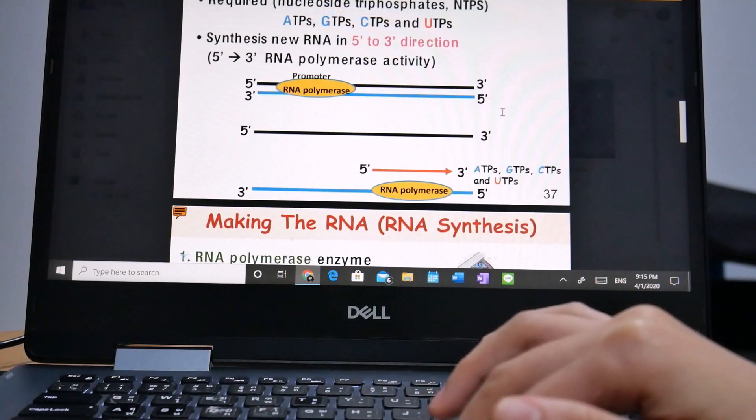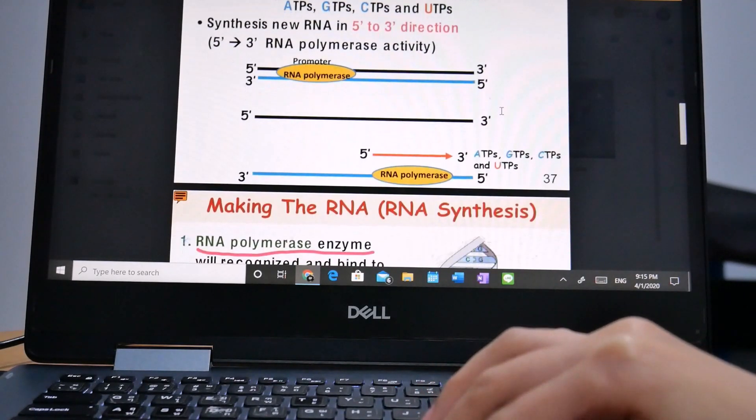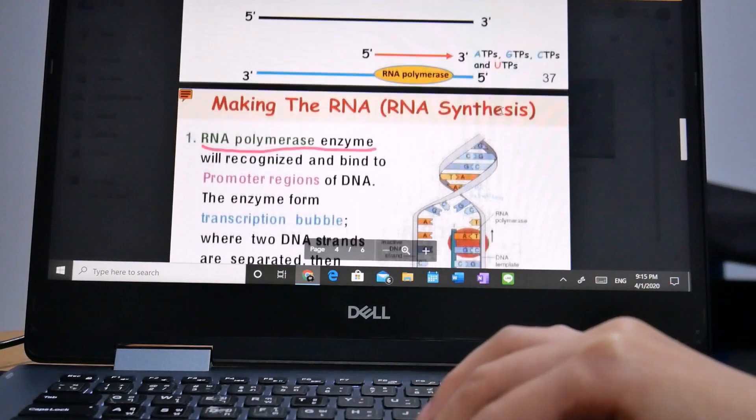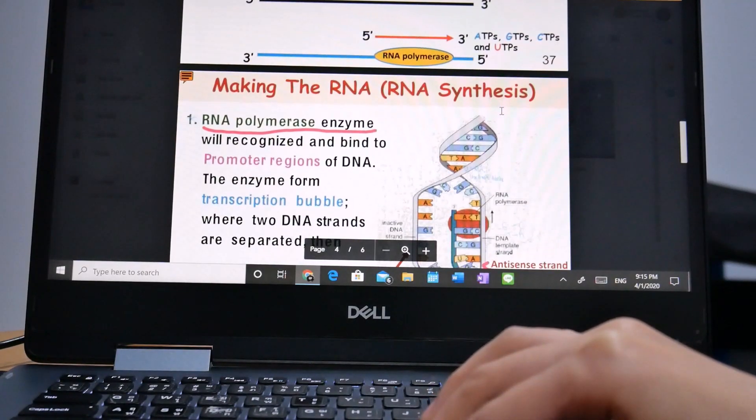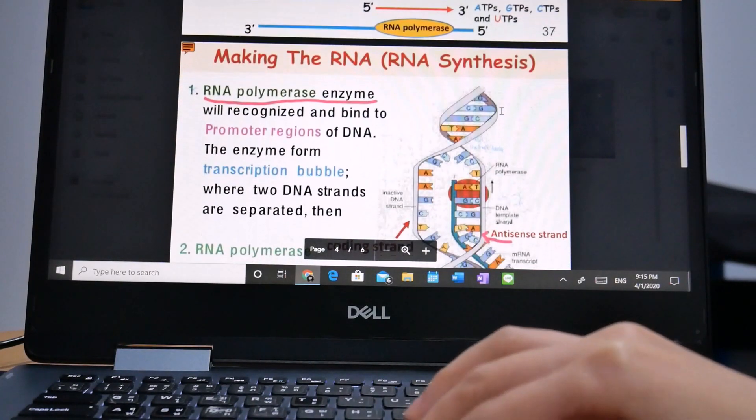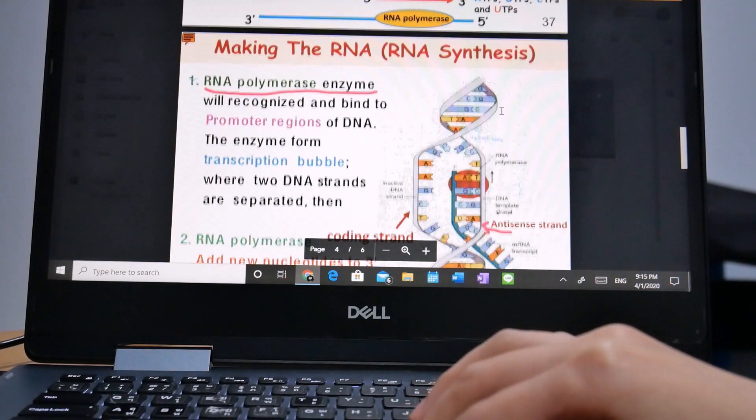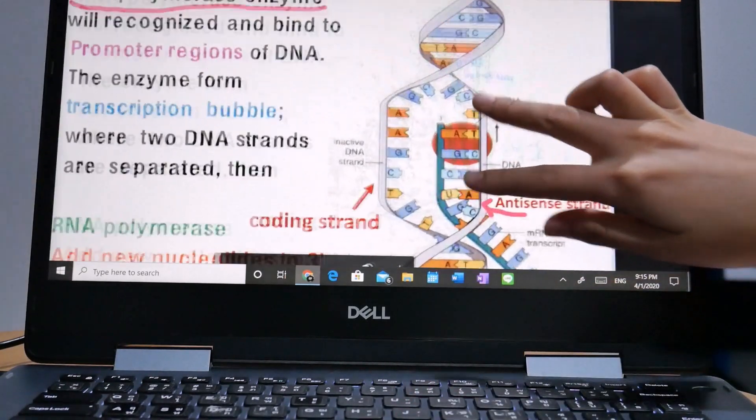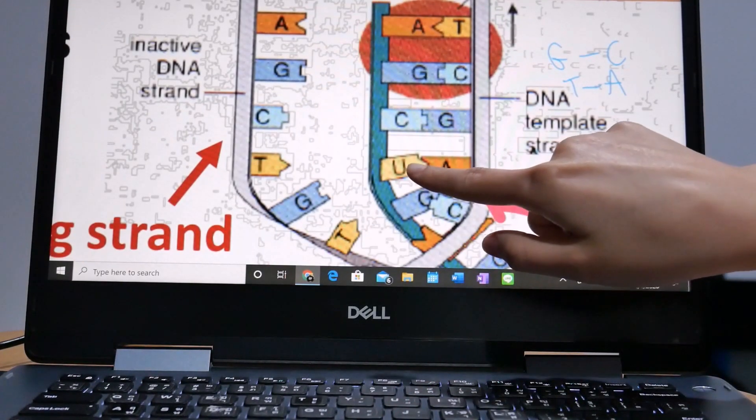The RNA transcript carries the same information as the non-template coding strand of DNA, but it contains the base uracil U instead of T.